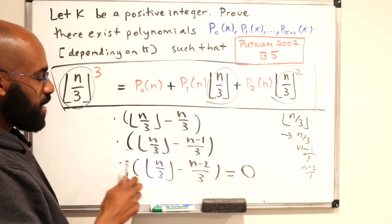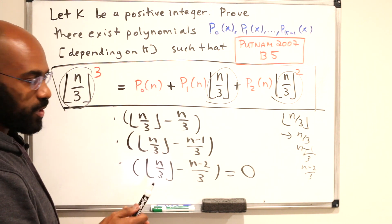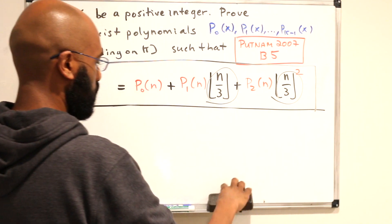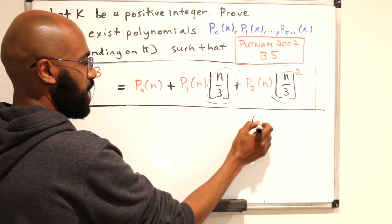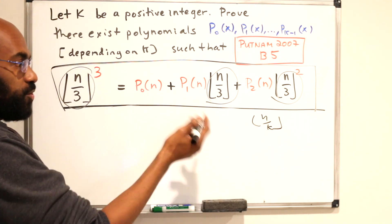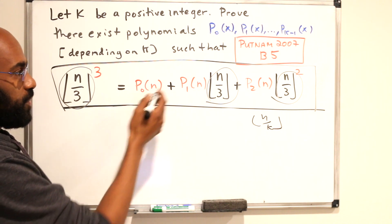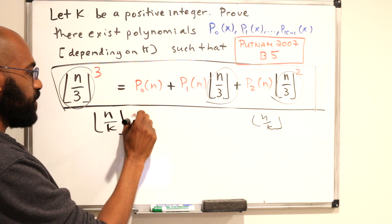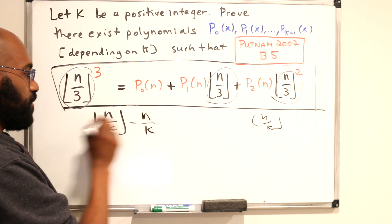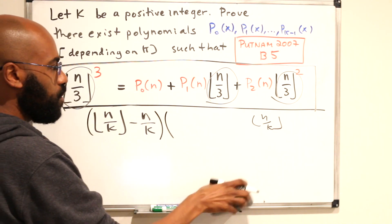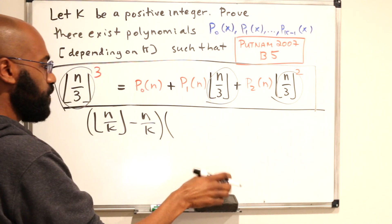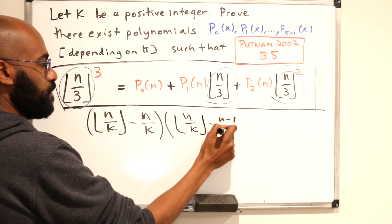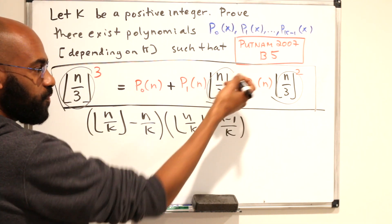So how would this generalize for general k then? Well, it seems like we have an idea of what's going to happen with general k. Say you have the floor of n over k. Using the same thing that happened with the floor of n over 3, it seems like the floor of n over k is going to take on one of k possible values. Either it's identically n over k, or it's n minus 1 over k, or it's n minus 2 over k, or etc.